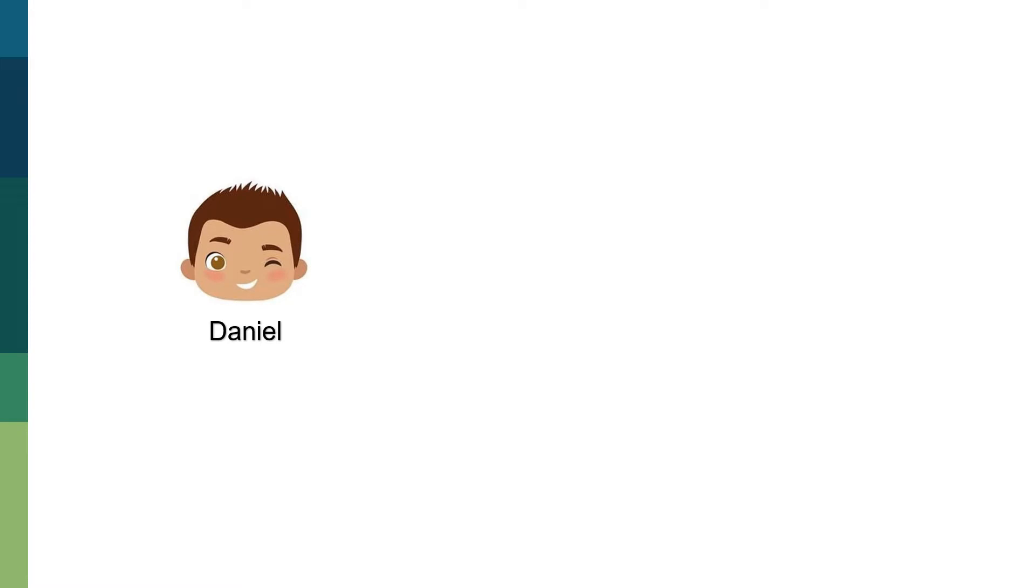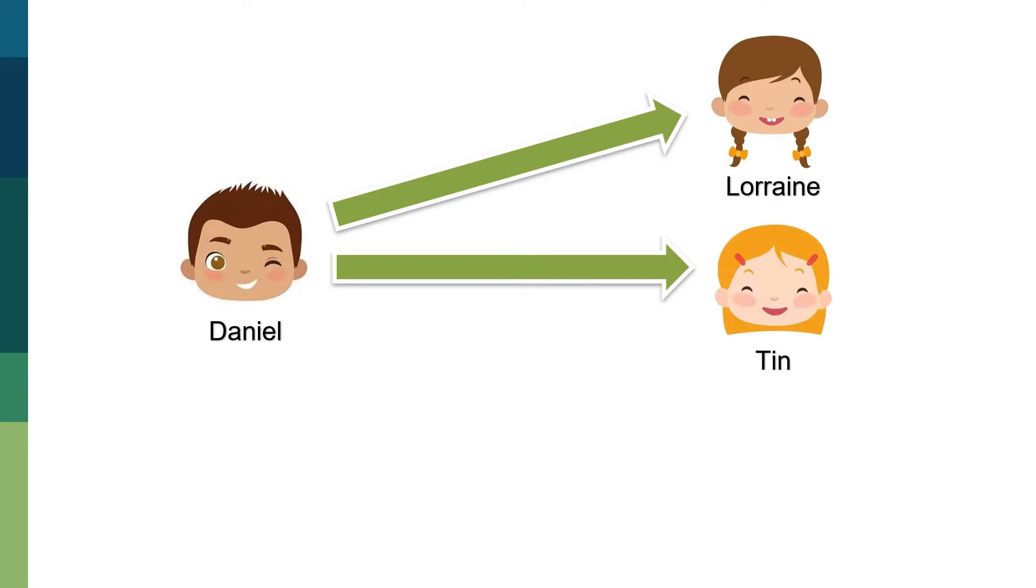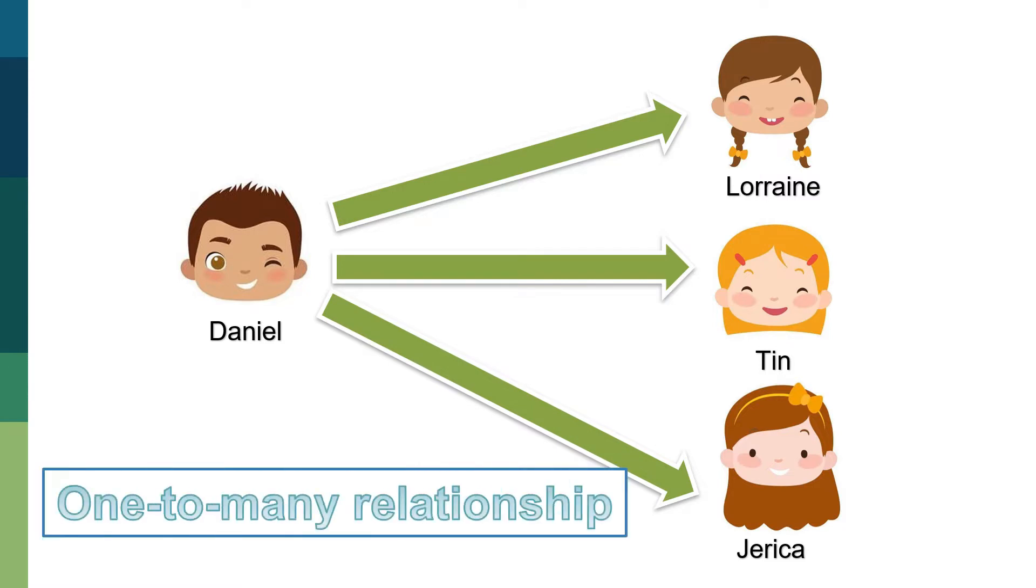Daniel, on the other hand, likes to collect, then select. He asked the three girls, Lorraine, Tin, and Jerika to be his date. The three girls were unaware that all of them were being asked out by the same guy. This is an example of one-to-many relationship.